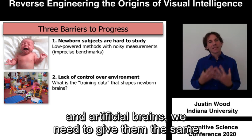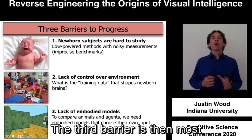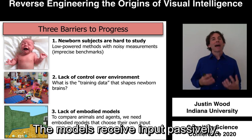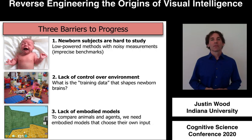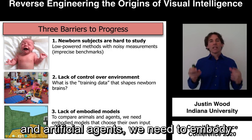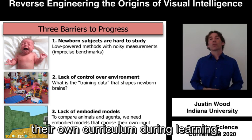The third barrier is that most computational models are disembodied — the models receive input passively. In contrast, animals have bodies and they choose their own input during development through active exploration. So to directly compare learning across biological and artificial agents, we need to embody computational models and allow those models to choose their own curriculum during learning.